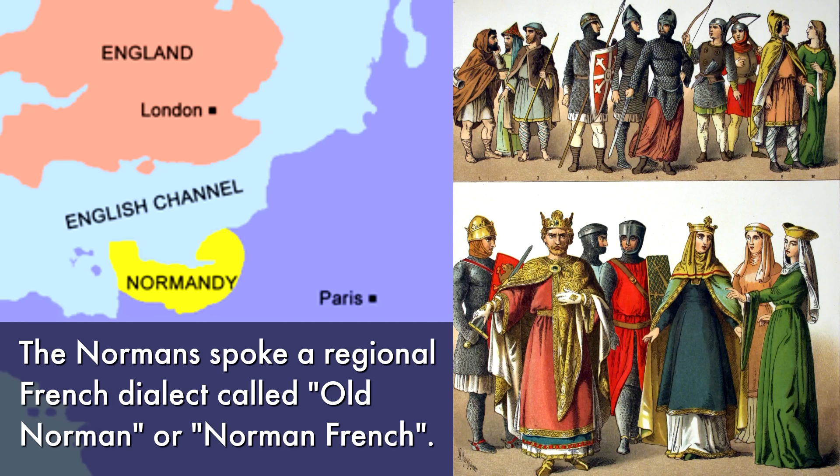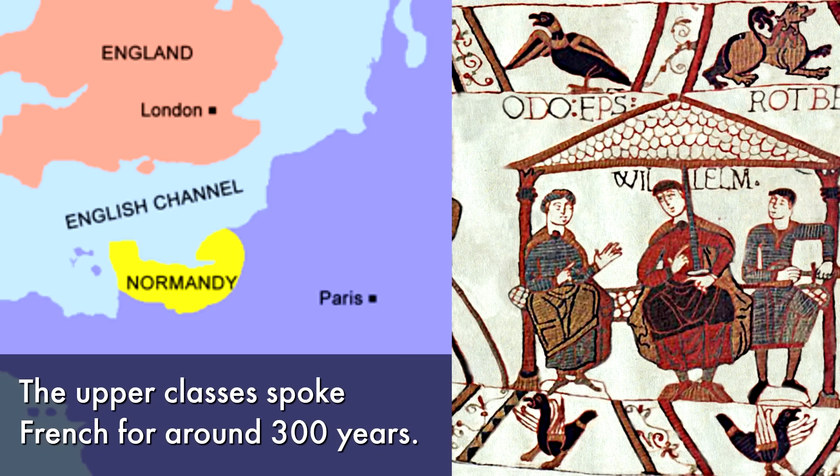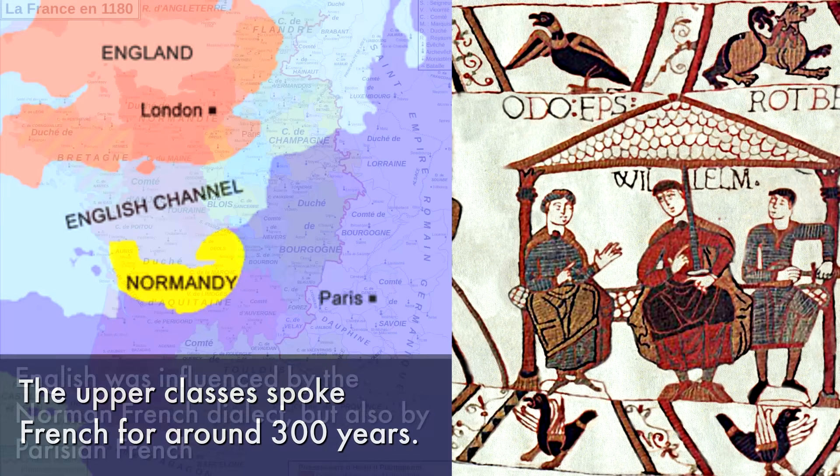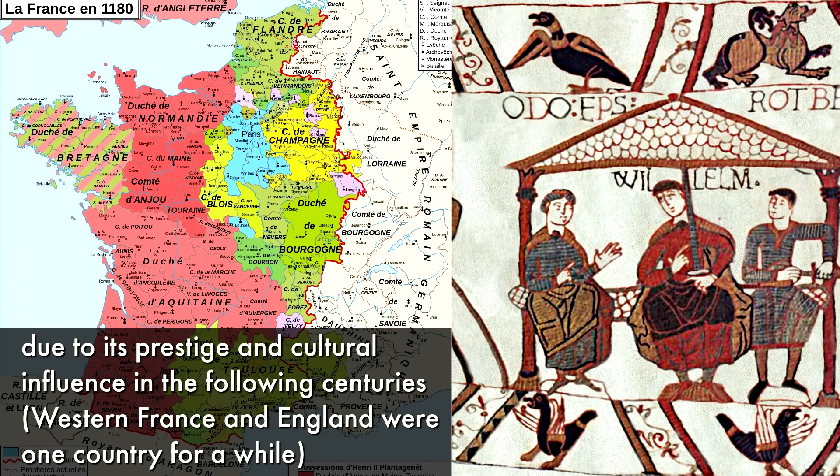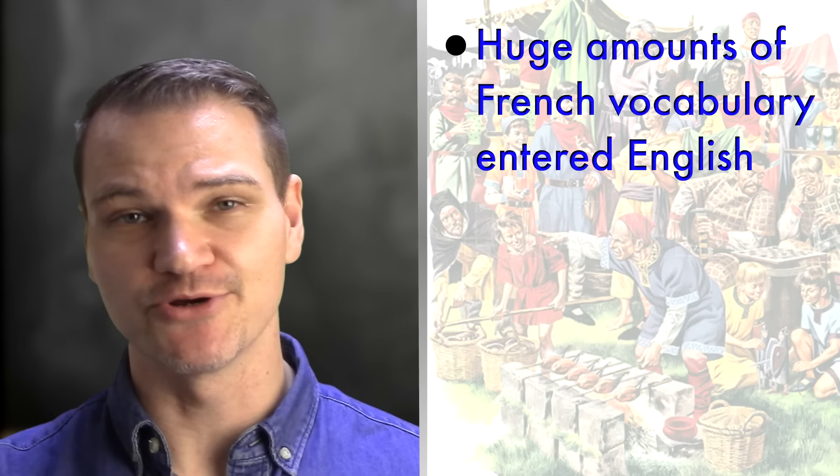The Normans spoke a regional French dialect called Old Norman, or Norman French. The upper classes in England spoke French for around 300 years. English was influenced by the Norman French dialect, but also by Parisian French, due to its prestige and cultural influence in the following centuries.